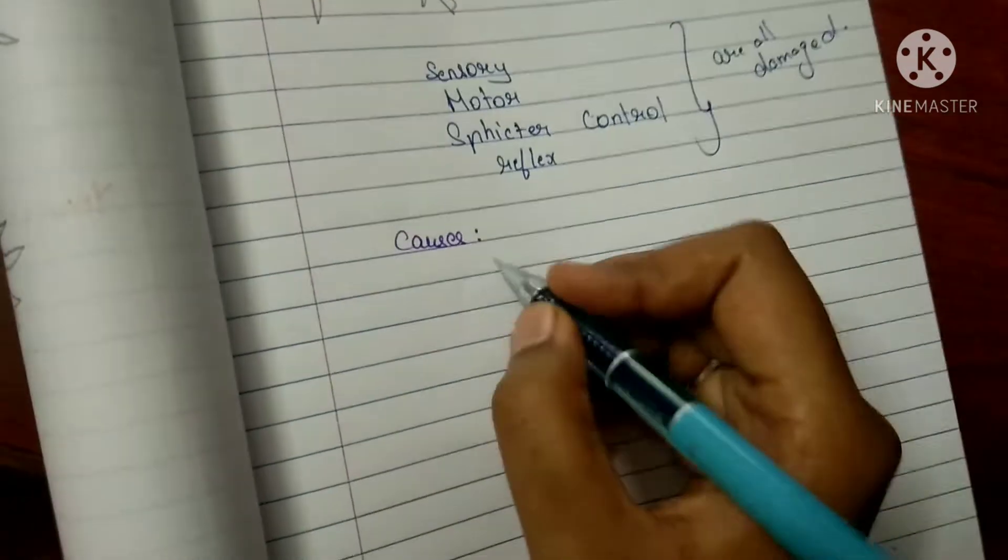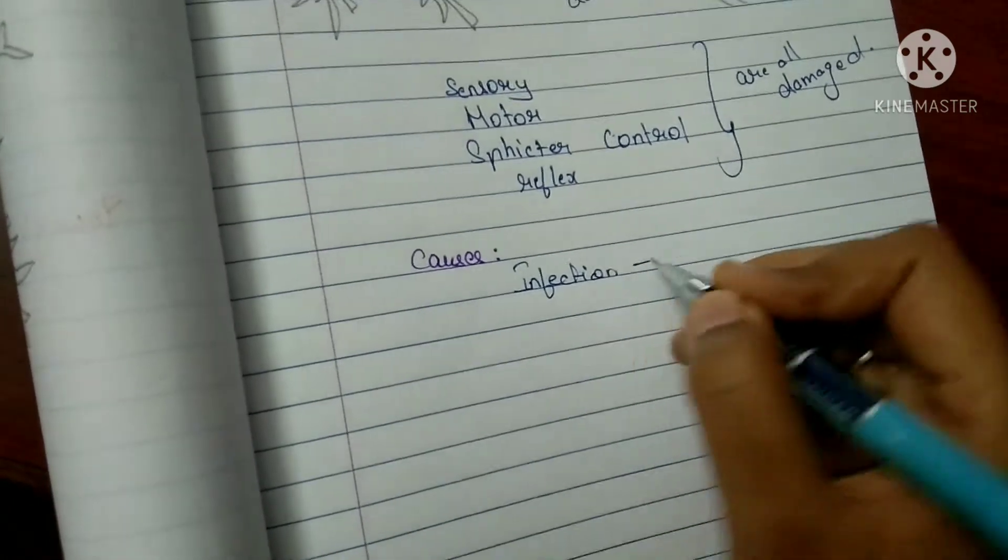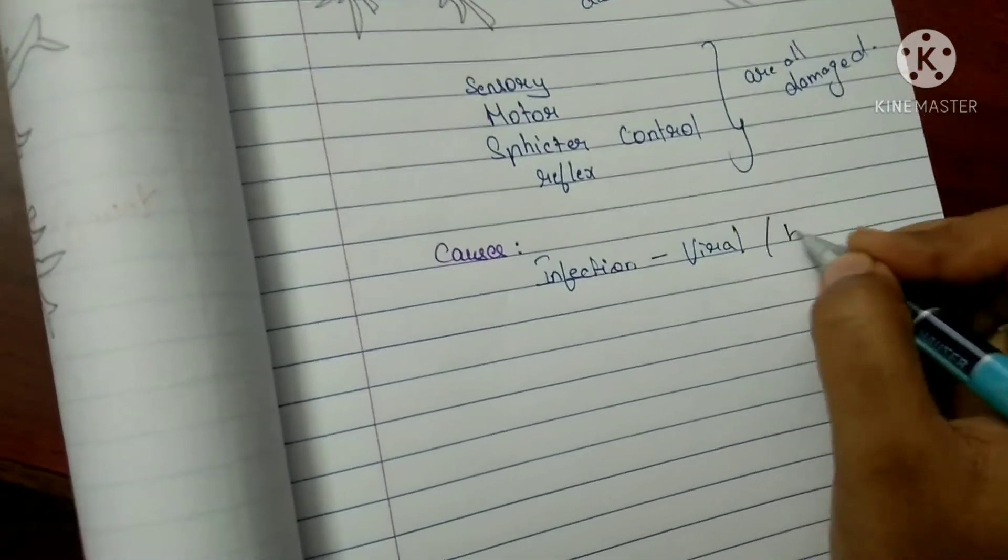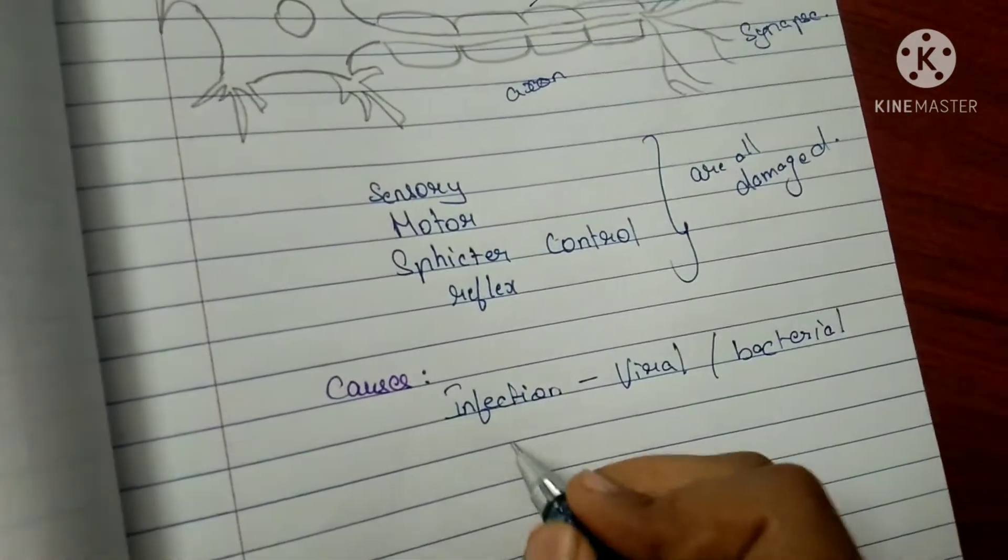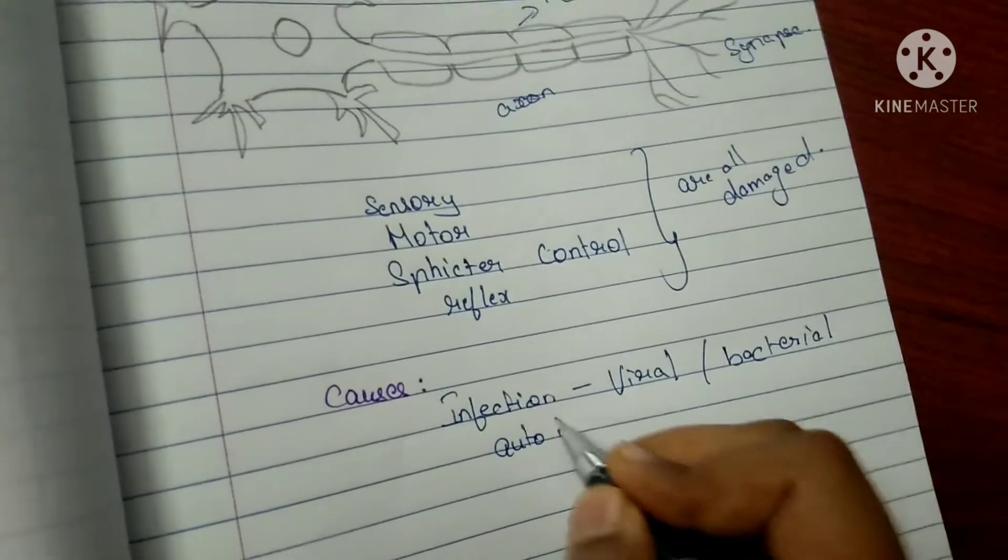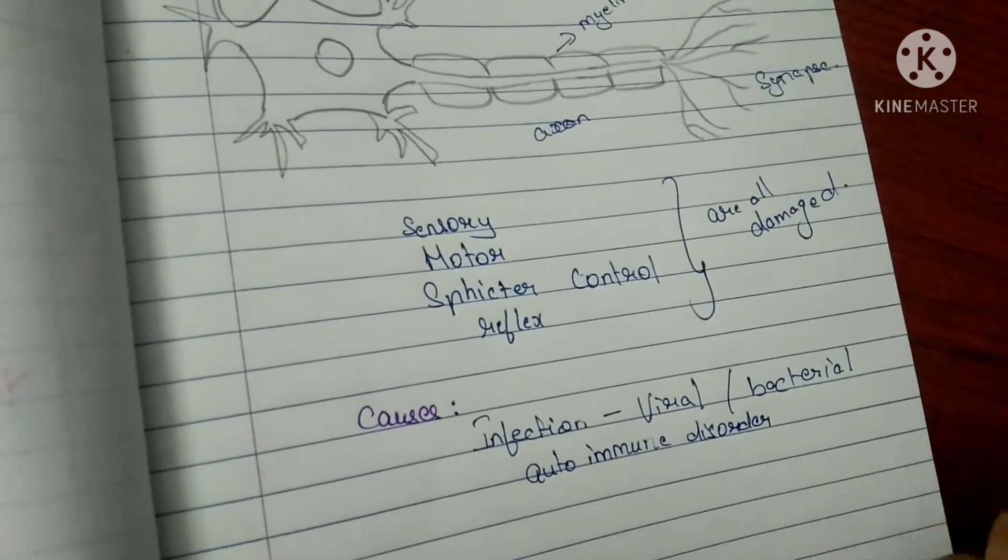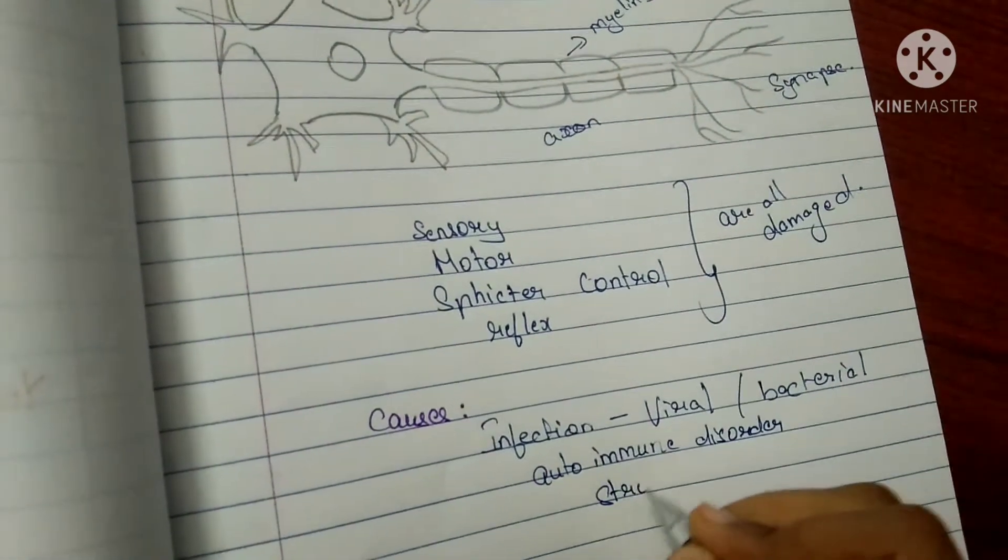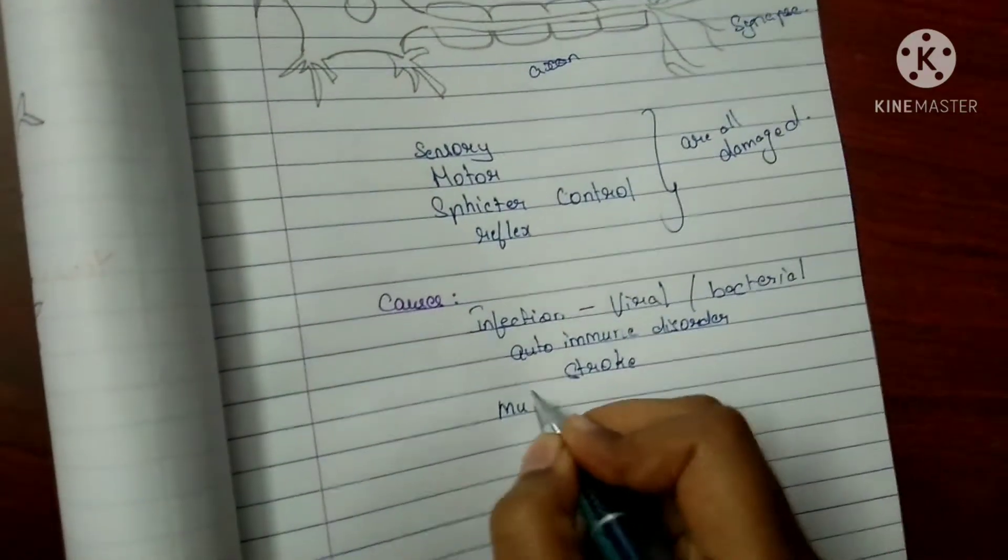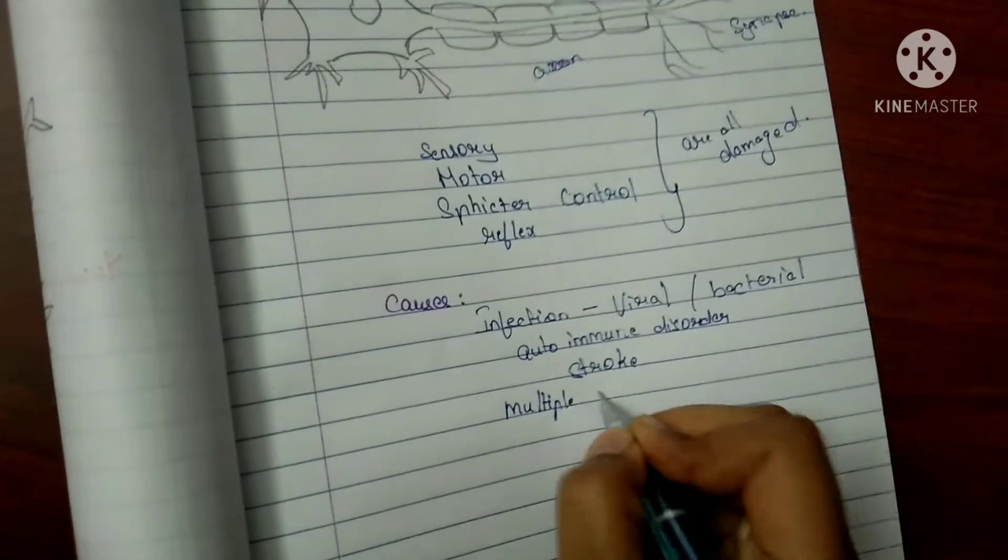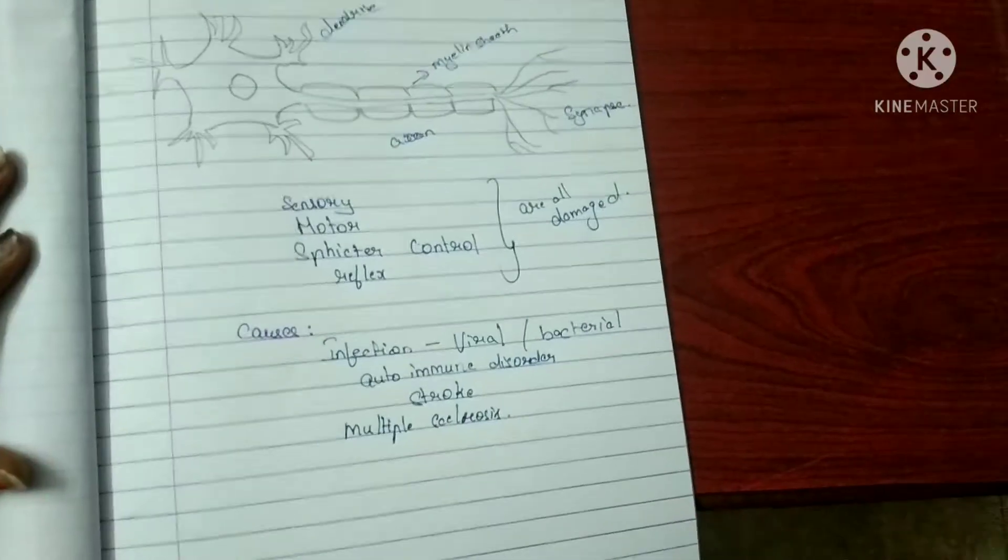There are many causes of transverse myelitis, but some of the most common causes are post-infections, including viral and bacterial infections like herpes, hepatitis B, HIV, and autoimmune disorders where the body's own cells destroy the tissues. Sometimes stroke occurs, and mainly, myelitis is a symptom seen in multiple sclerosis. Multiple sclerosis is also a demyelinating disease of the brain and spinal cord, and is also considered to be autoimmune.